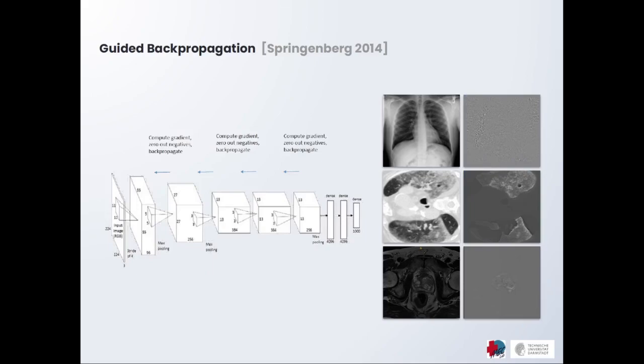Another technique that is more precise and fine-grained is guided backpropagation. Here, the input image is propagated through the model first, just like in GradCam, where the gradients are computed at the end. Then these gradients are backpropagated to the first layer, where at each layer all negative gradients are set to zero, so that only the positive attention will be computed. The results, as can be seen on the right, are fine-grained attention maps.